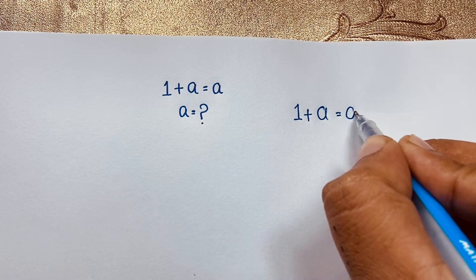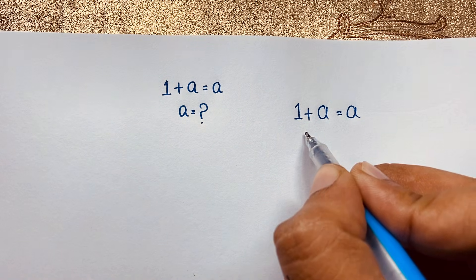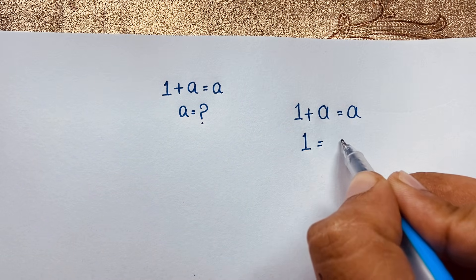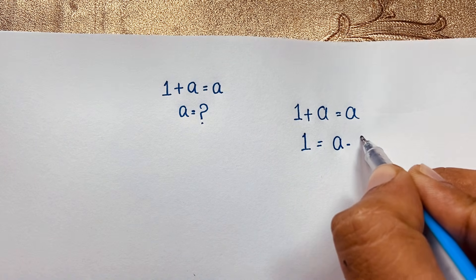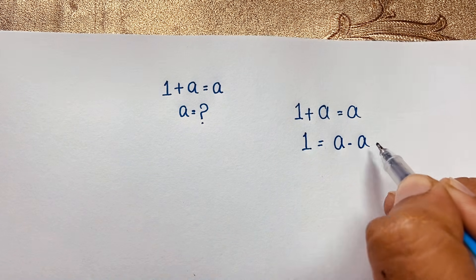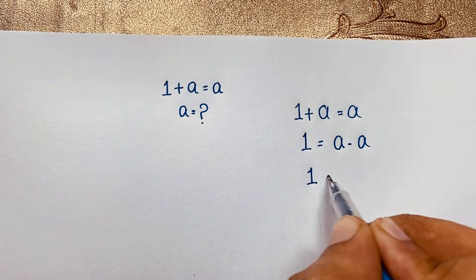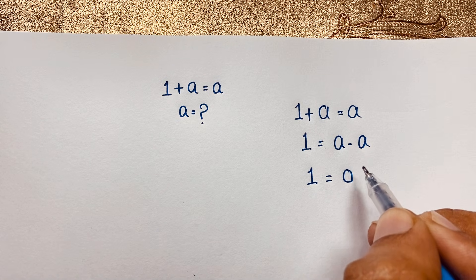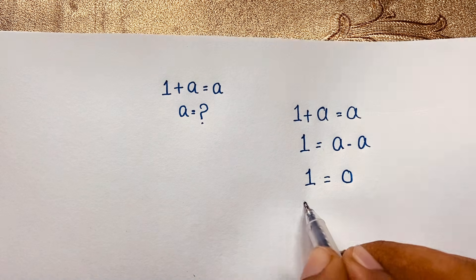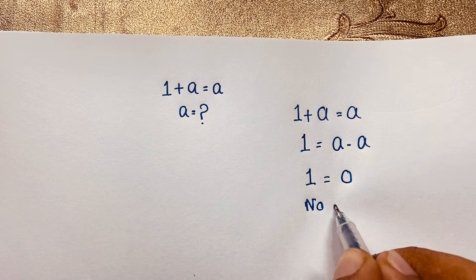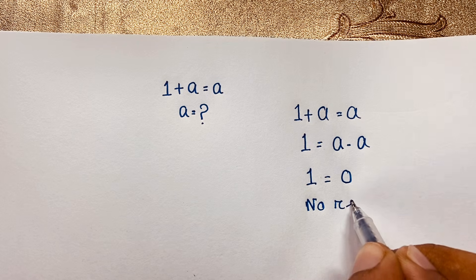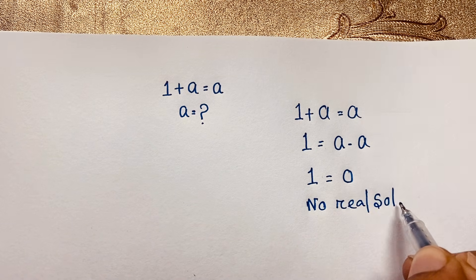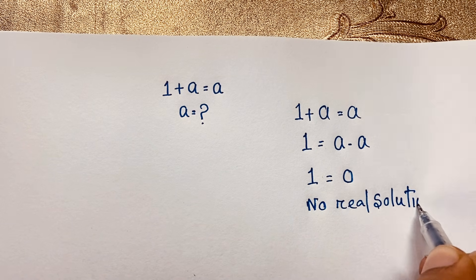At this moment, you can rearrange it: 1 is equal to a minus a, which gives us 1 is equal to 0. So this is impossible — there is no real solution to this math problem using this direct method.